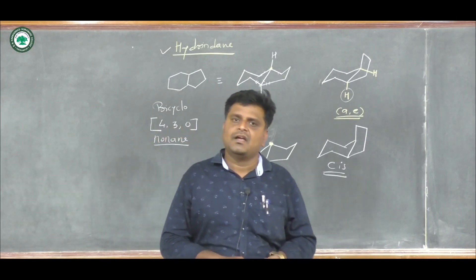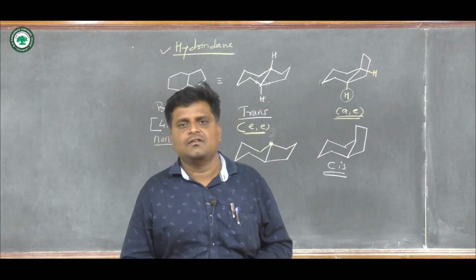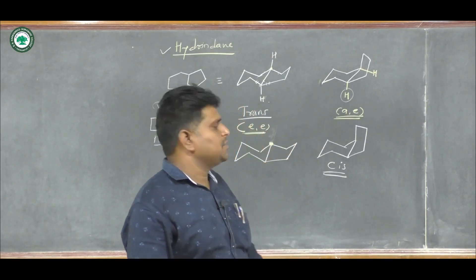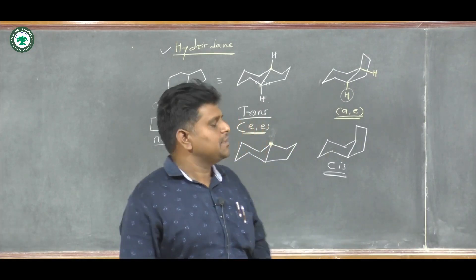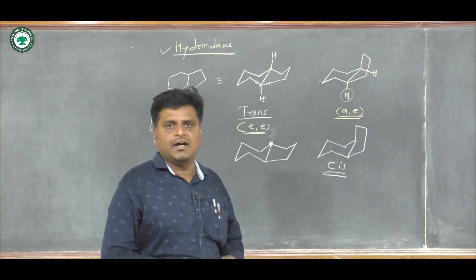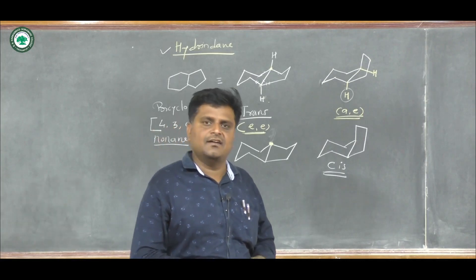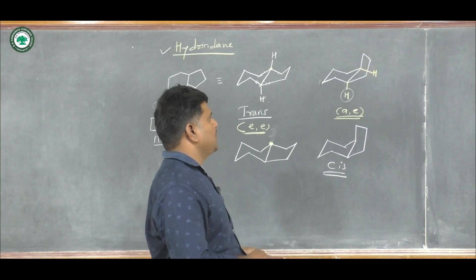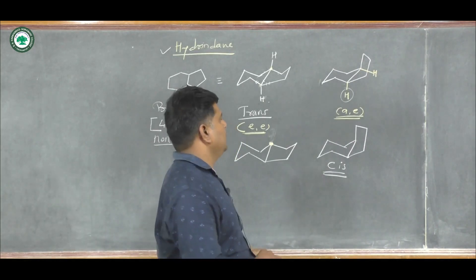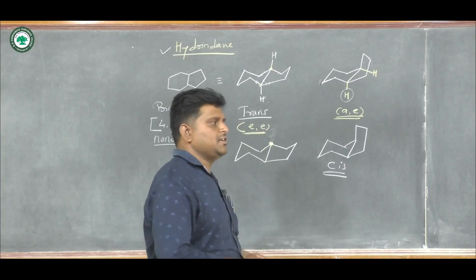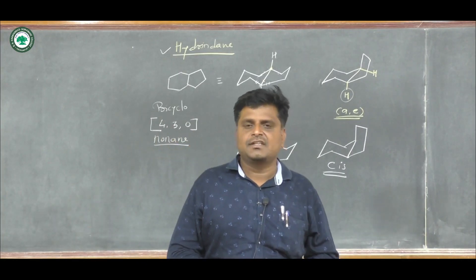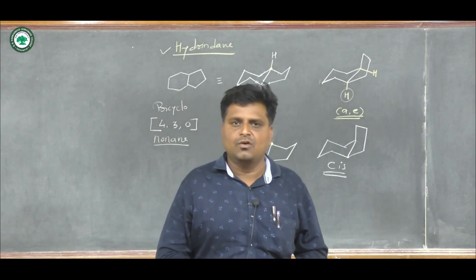In this lecture we talked about the stereochemistry of hydrindane — when a six-membered ring is fused with a five-membered ring. We drew both the cis and trans hydrindane structures. In trans hydrindane, one hydrogen is at beta axial and the other is at alpha axial. In the cis isomer, one hydrogen is at alpha axial and the other is at alpha equatorial. In the next lecture we will discuss different types of other fused ring systems. Thank you.